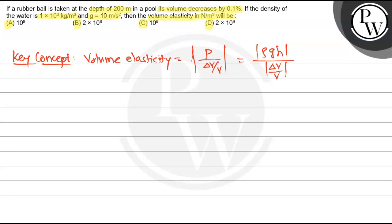The volume elasticity will be equal to density of water ρgh, which means 10³. G which means 10, H which means 200 meters. Divided by volume decrease divided by volume.